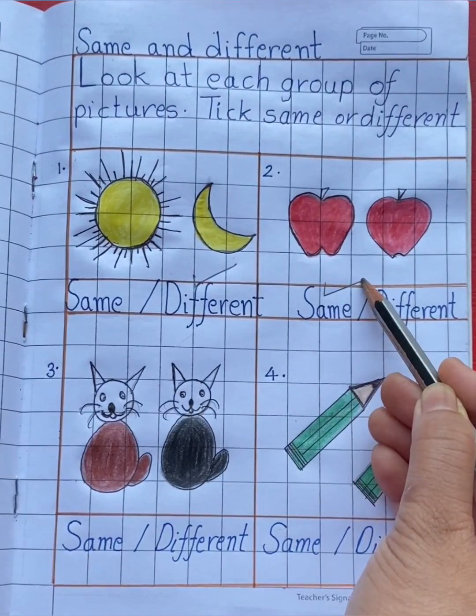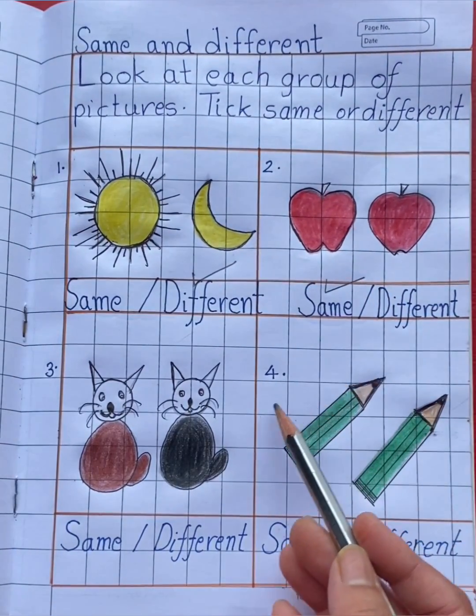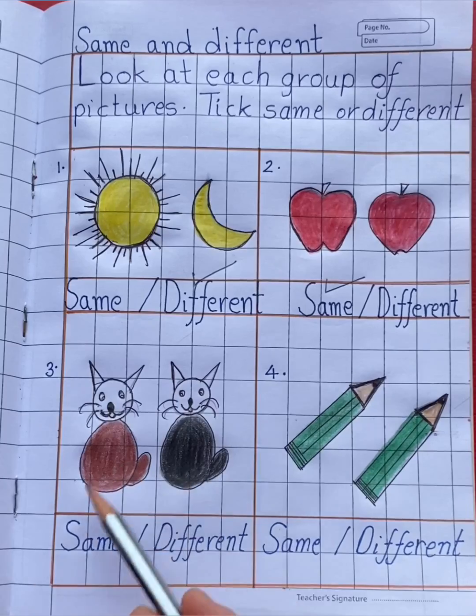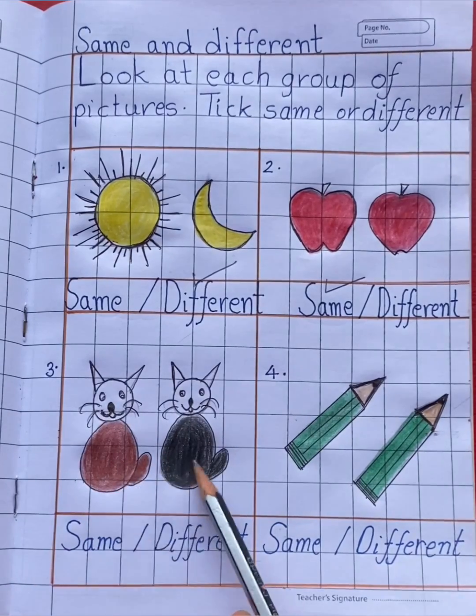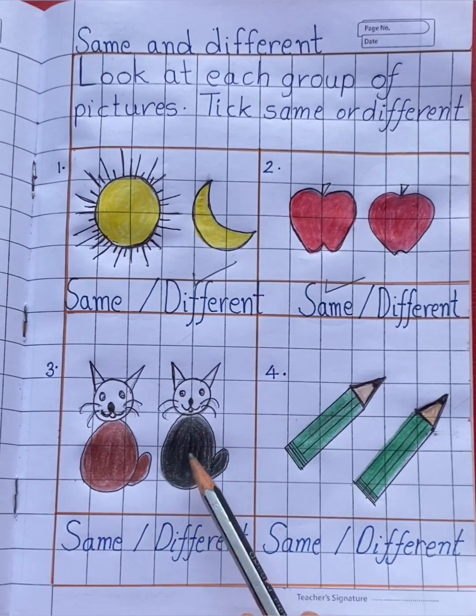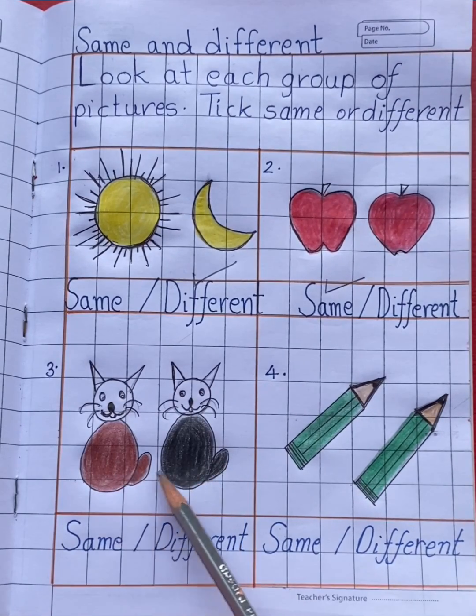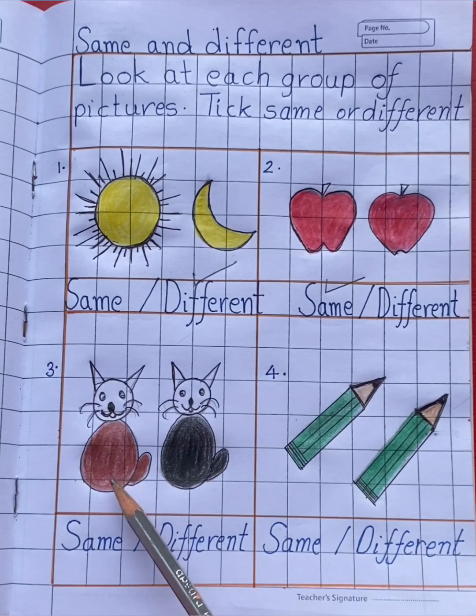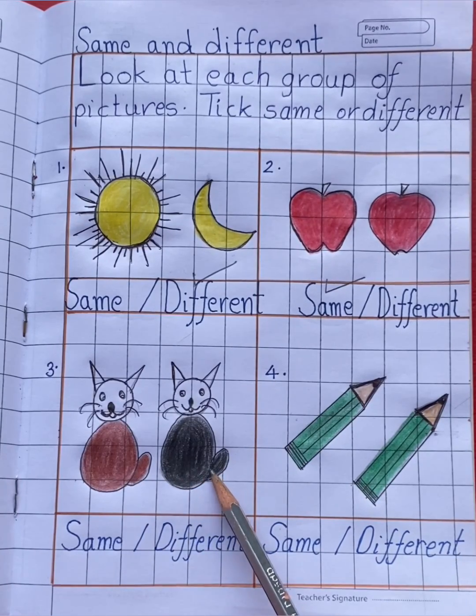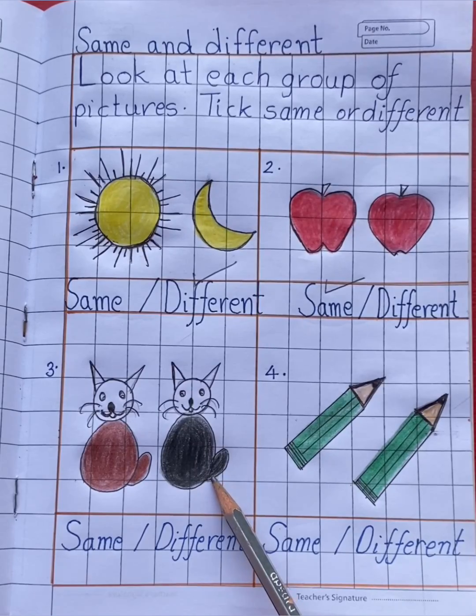Now in this group you can see two cats. Are they same or different? Yes, different. The color of the cats are not same. First cat is brown in color, second cat is black in color. So they are different, so tick different.